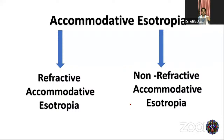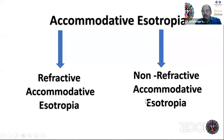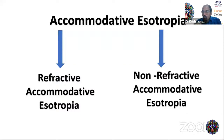In refractive accommodative esotropia, there is no squint to begin with — the child's own intentional accommodation for clear distance vision causes the squint. Some hyperopic children never develop esotropia because they don't bother accommodating for distance, keeping straight eyes — but they may develop ametropic amblyopia in both eyes. The child with refractive accommodative esotropia will see clearly for distance but squint one eye and may develop strabismic amblyopia.